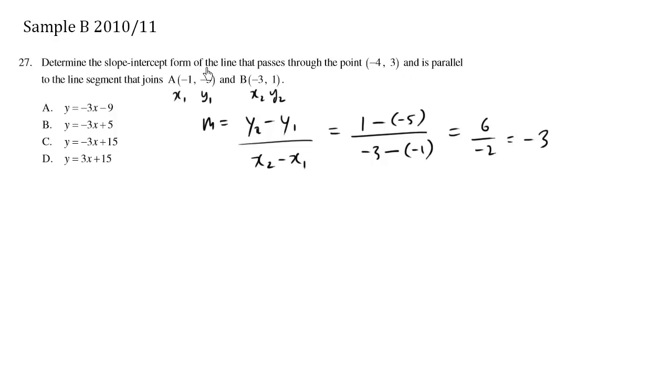Now we want the slope that is parallel to this line here. Parallel means we have the same slope, so our final line will have the same slope, which is negative 3.